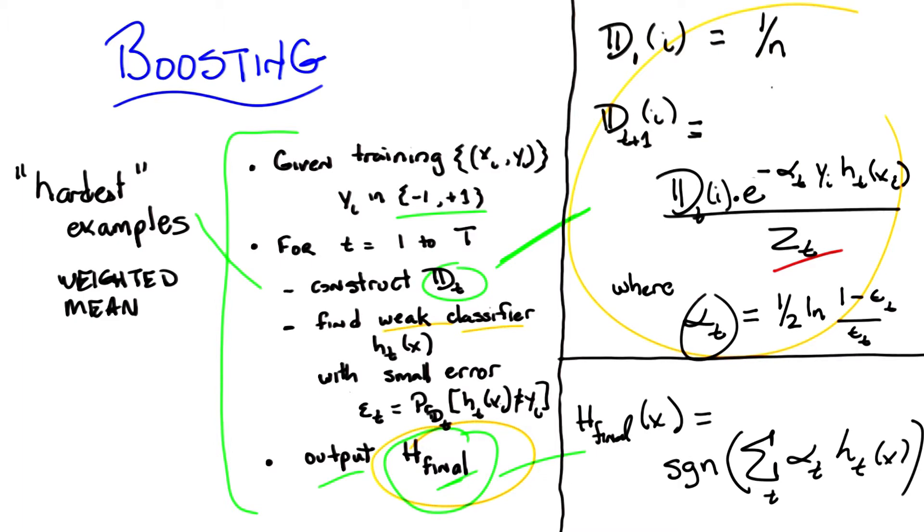So how many things could it not get right? How many things could it misclassify? How many things could it get incorrect? Well, I'm going to argue, Michael, that that number has to be small. There cannot be a lot of examples that it gets wrong. So you want to know why? You want to know my reasoning for why? Yeah.